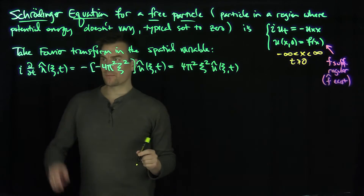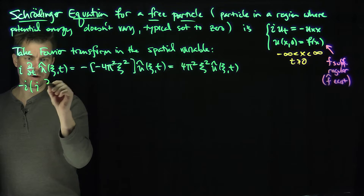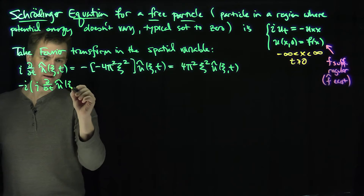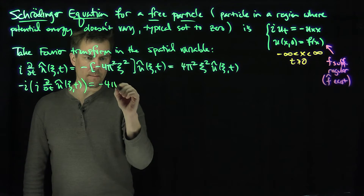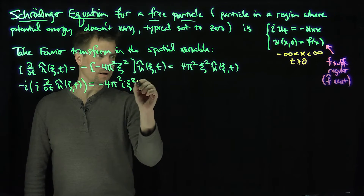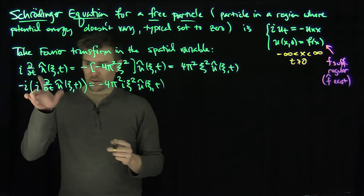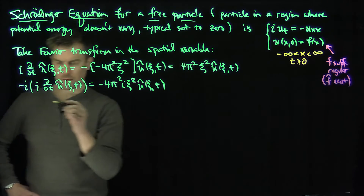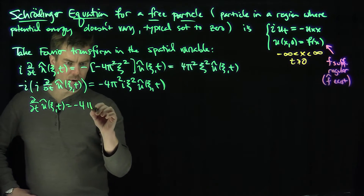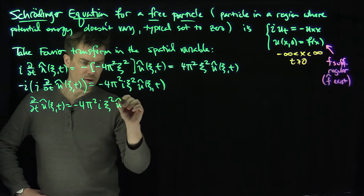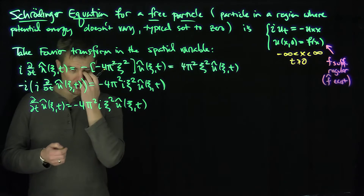Now I'm going to multiply both sides by negative i. So negative i times i · ∂/∂t û(ξ, t) equals negative i · (−4π²ξ²) û(ξ, t). Since i times i is negative 1, the left side simplifies to ∂û/∂t. So we get: ∂/∂t û(ξ, t) = −4π²i ξ² û(ξ, t). This is a first-order ODE, which we can solve.